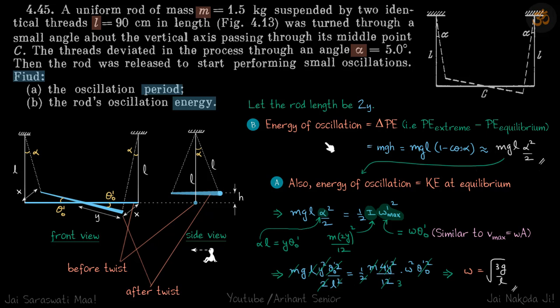This is the energy of oscillation, answer of second part. Now for the first part let's write it in the form of energy of oscillation equals kinetic energy at equilibrium. We already found energy of oscillation, so let's use that equals half I omega dash max squared.